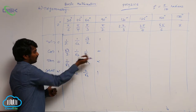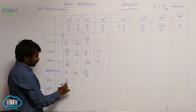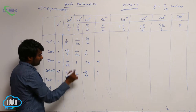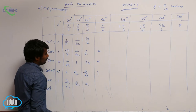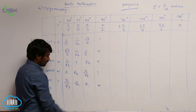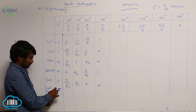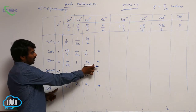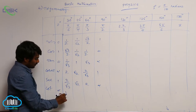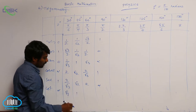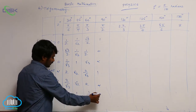Secant theta is 1 by cos theta, so take the reciprocal of the cos values for respective angles: 1 by 1 is 1, then 2 by root 3, root 2, 2, and undefined. Cotangent theta is 1 by tan theta. The values are: undefined, root 3, 1, 1 by root 3, and 0.